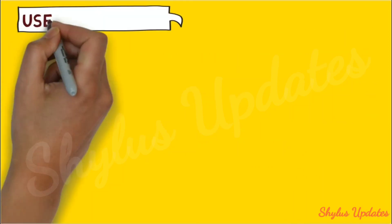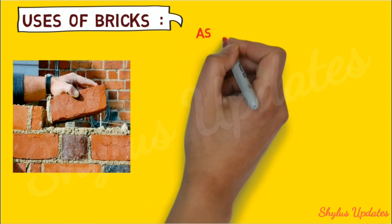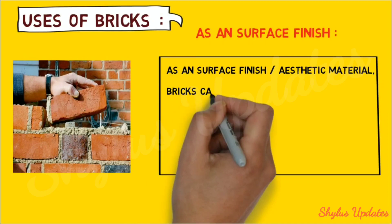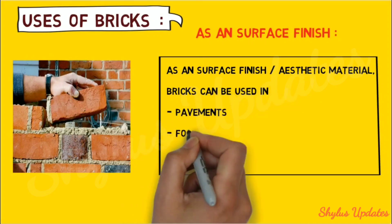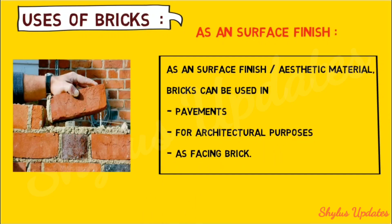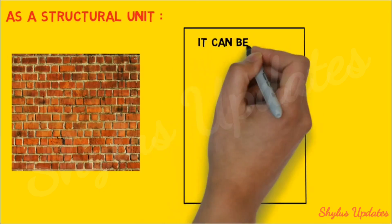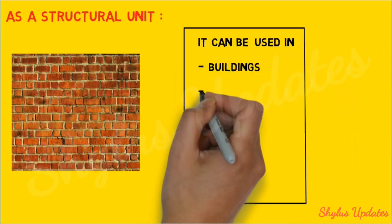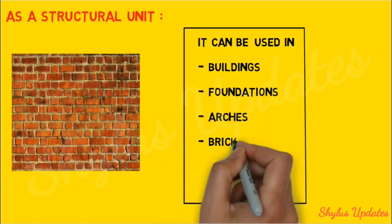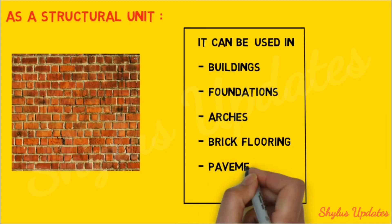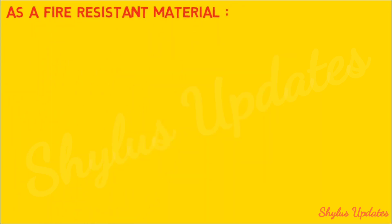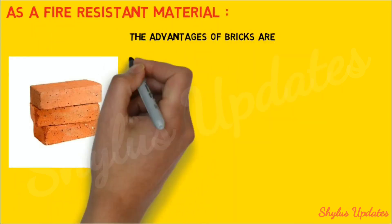Now let's see the uses of bricks. When it comes to surface finish, that is aesthetic appearance, bricks can be used in pavements, for architectural purposes, and as a facing brick. As a structural unit, bricks can be used in buildings, foundations, arches, brick flooring, pavements, and bridges. Bricks can also be used as a fire-resistant material.